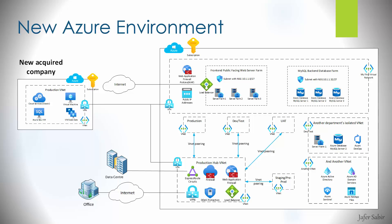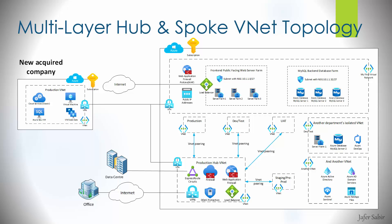We have also acquired a new company that already has an Azure subscription with its own set of services, and we want to provide connectivity between them and us. We create connections using VPN gateways instead of standard VNet peering due to compliance requirements to encrypt the traffic. This is called VNet-to-VNet connection, which is like an IPsec tunnel, so both Azure subscriptions and their VNets have connectivity to each other over the Microsoft Azure backbone network with encrypted traffic.